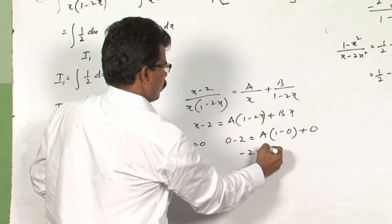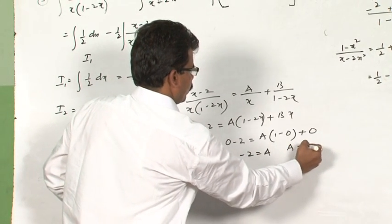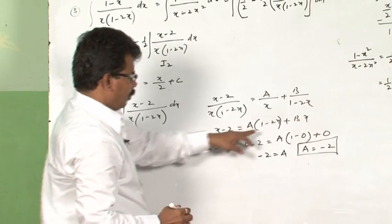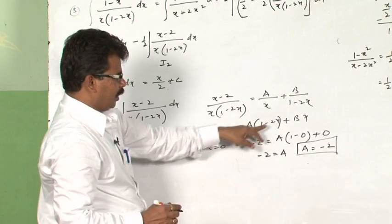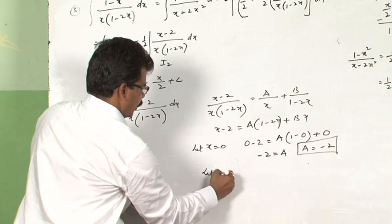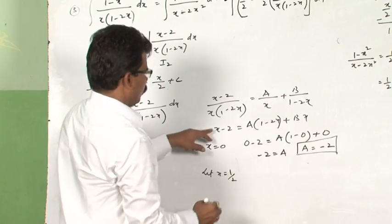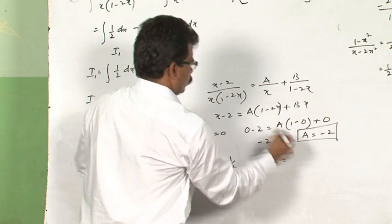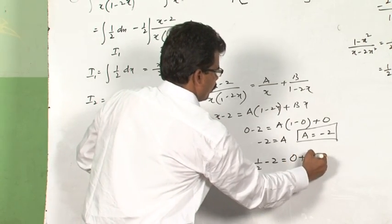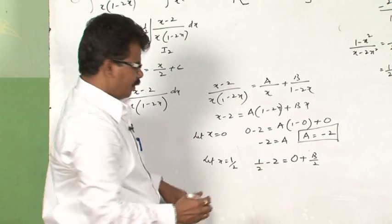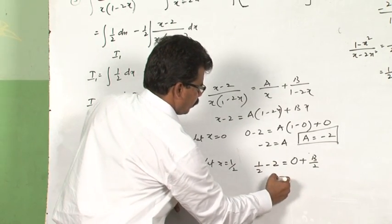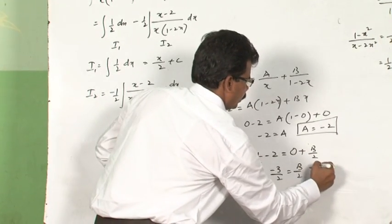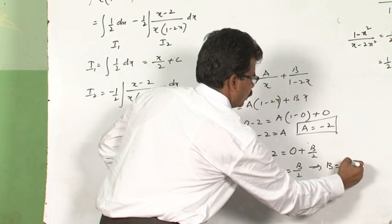The answer: minus 2 is equal to A, implies A is equal to minus 2. So we got one value, that is A. To get B, you have to eliminate this one. Let x equal to 1/2. You will get LHS: 1/2 minus 2 is equal to B/2. 1/2 minus 2 is nothing but minus 3/2 equals B/2. So 2 will cancel, which implies the value of B is equal to minus 3.